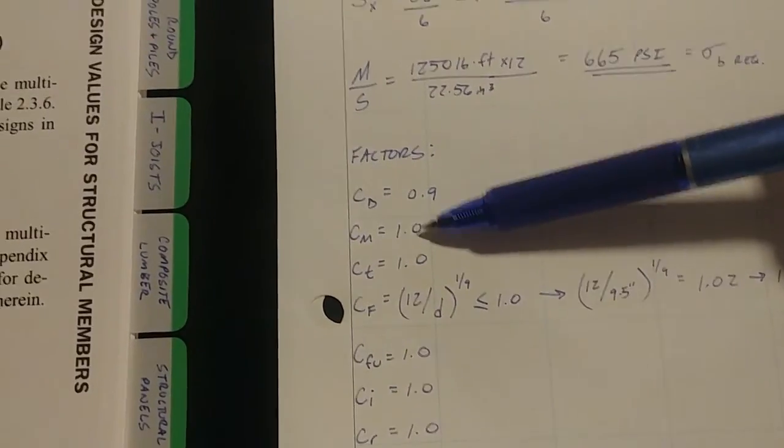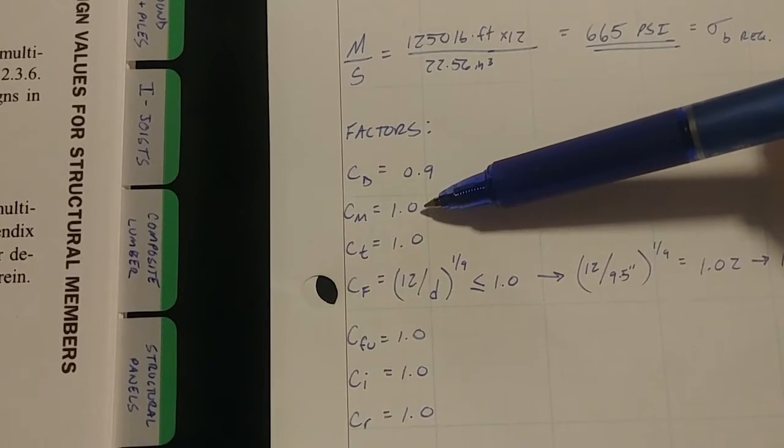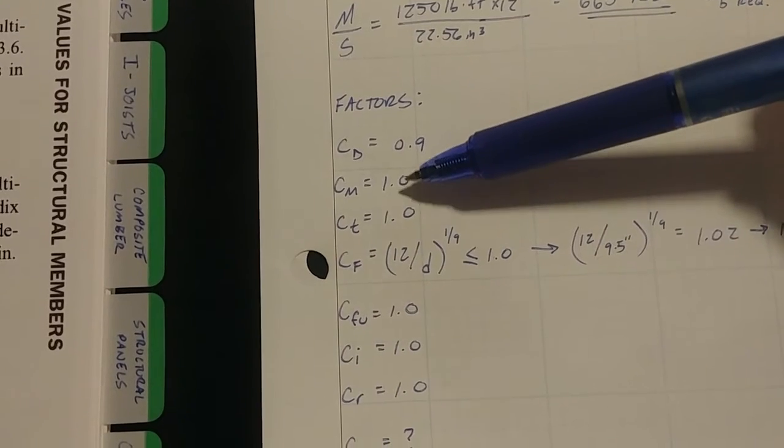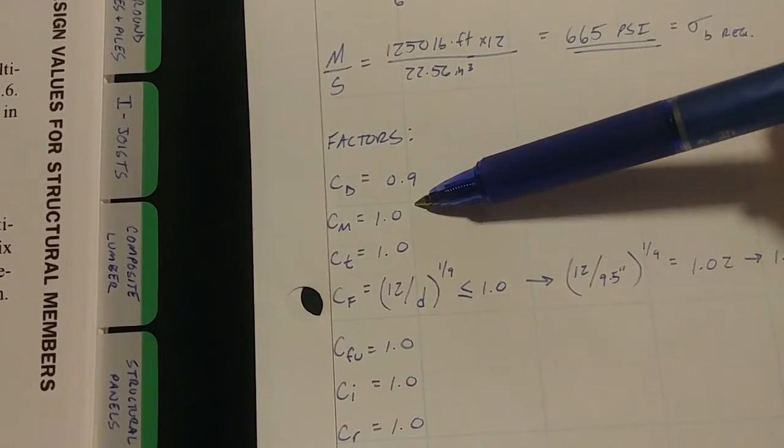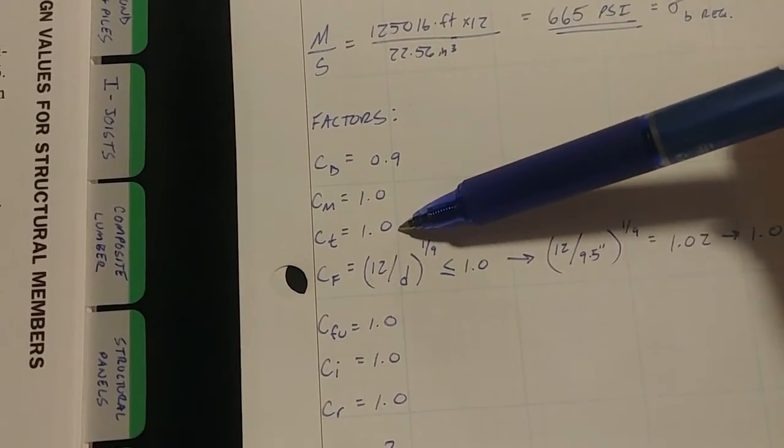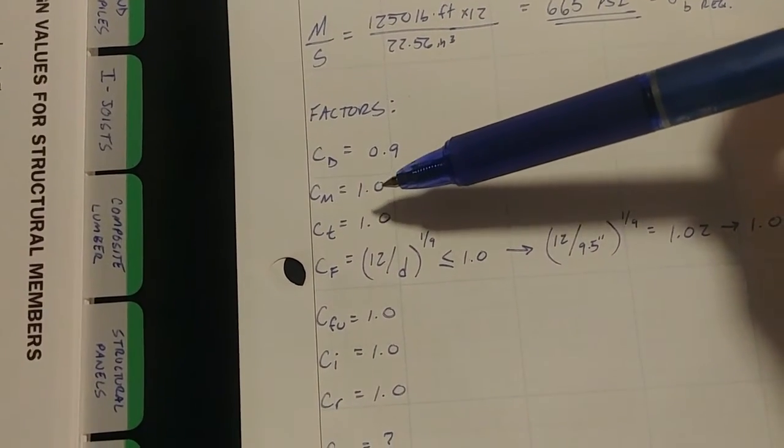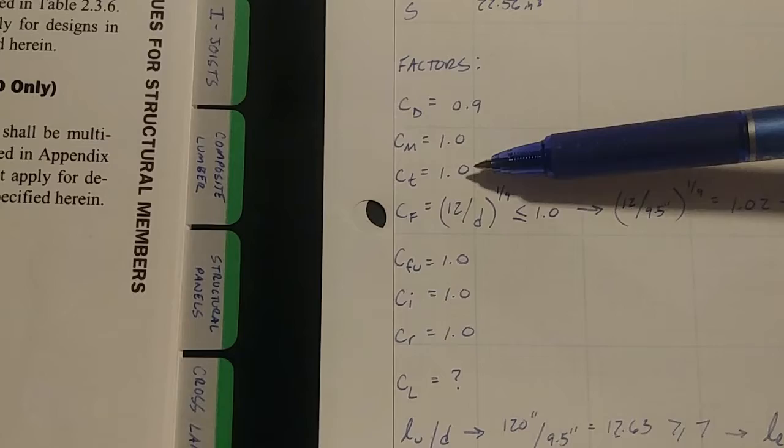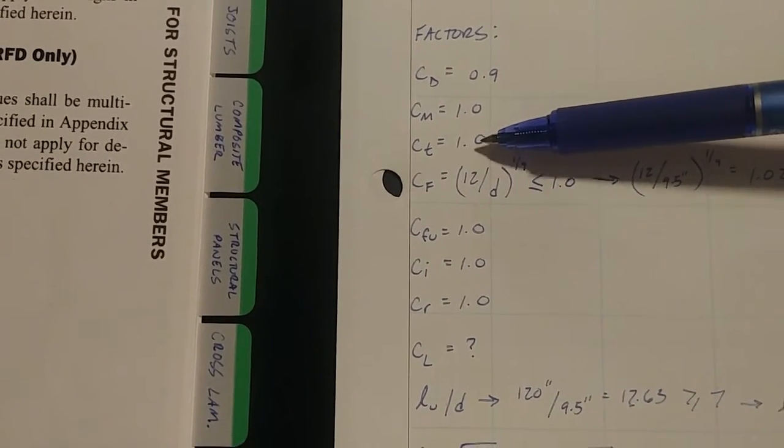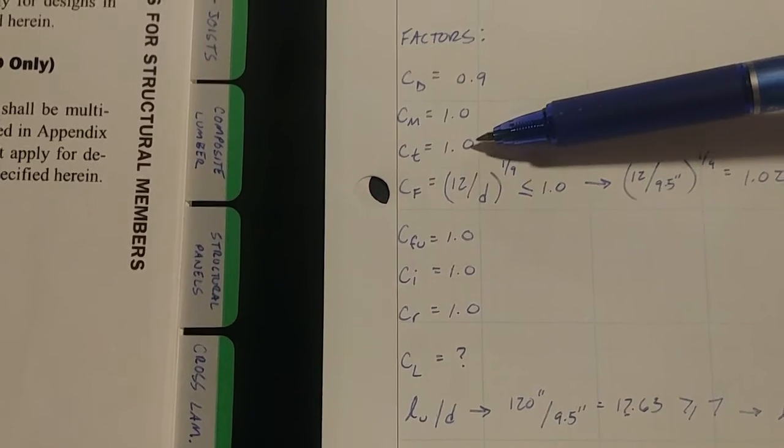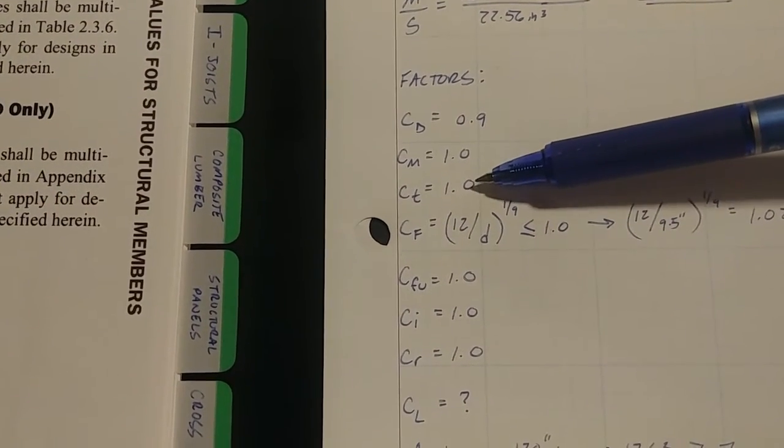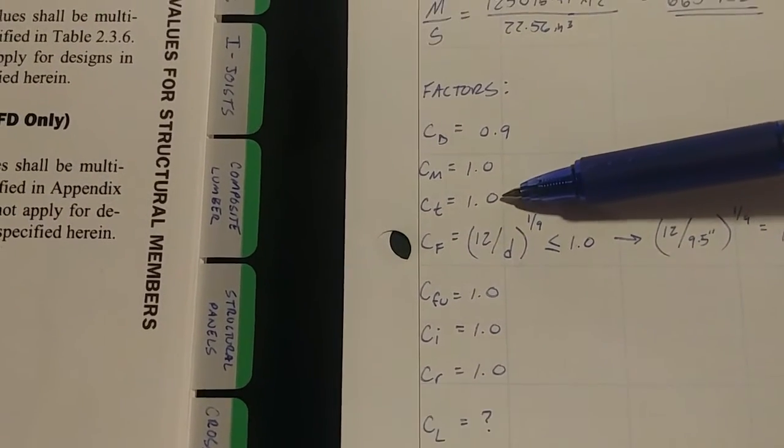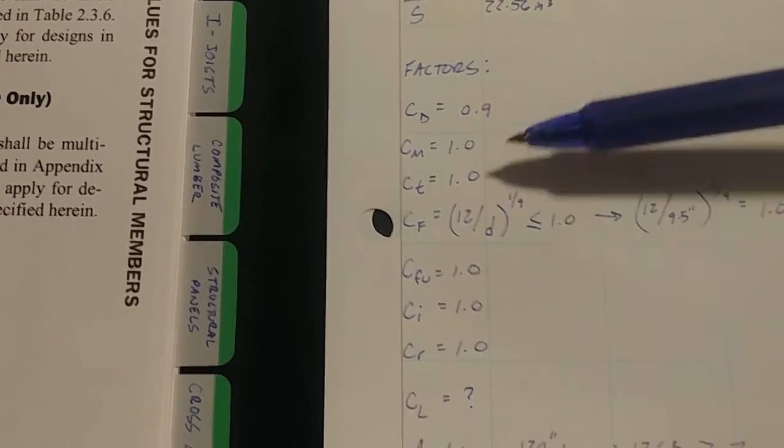The next is CM. So that's your moisture content. Anytime you're doing normal construction, that's wood members that aren't exposed to the outdoors or to weather or moisture, CM is going to be 1.0. CT, that's temperature. I think it's, I can't remember exactly, but it's defined in this book. I think it's any members that are exposed to temperatures greater than 100 degrees or 120 degrees or something like that. You might have a different factor here, but for anything else, any type of structure that you're building that's wood for occupancy, CT is almost always going to be 1.0.